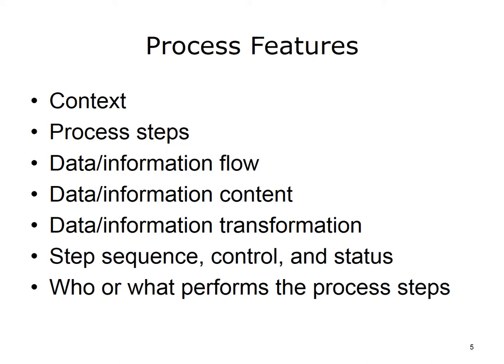Information content refers to the pieces of data and information required for process or informational steps or decisions. Data and information transformation refers to manipulations performed on data — for example, calculating age from a patient's date of birth and today's date. Step sequence, flow control, and state or status all refer to the order in which data or things move through a process, and the logic that controls that flow. And finally, roles refer to who or what performs the process steps.